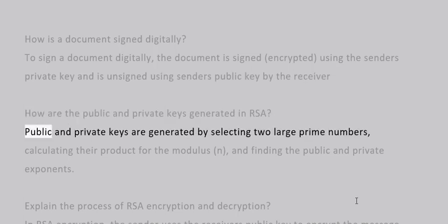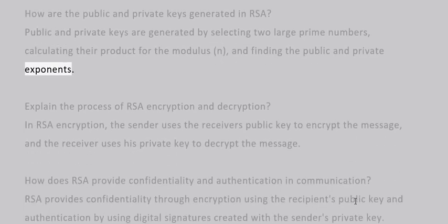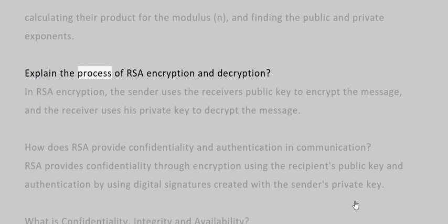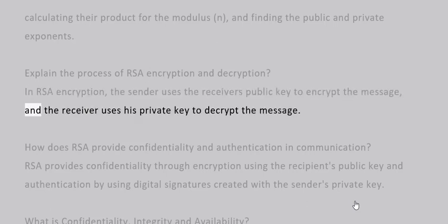How are the public and private keys generated in RSA? Public and private keys are generated by selecting two large prime numbers, calculating their product for the modulus n, and finding the public and private exponents. In RSA encryption, the sender uses the receiver's public key to encrypt the message, and the receiver uses his private key to decrypt the message.